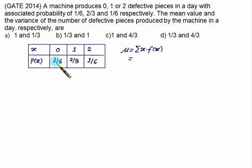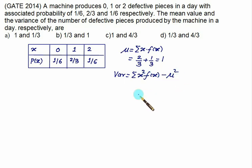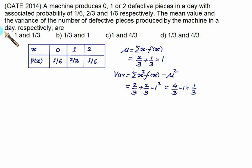The first term is 0. The second term is 1 into 2 by 3 equals 2 by 3, plus 2 into 1 by 6 equals 1 by 3. So 2 by 3 plus 1 by 3 equals 1, giving mean equals 1. For variance, squaring x and multiplying by f(x): 1 squared into 2 by 3 is 2 by 3, plus 4 into 1 by 6 is 2 by 3, minus mu squared which is 1 squared. So variance is 4 by 3 minus 1, which equals 1 by 3. Choice A is the correct choice.